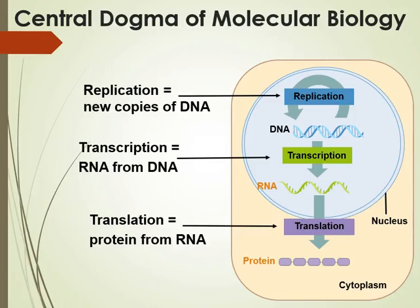Now we're going to focus on DNA replication. Before we get to that, I want to give you the bigger picture, which is this three-step process that allows the code on our DNA molecules to be translated into all of the proteins that our cells need to function. This process allows our genetic information to be passed on from parents to offspring, and for our genetic codes to be translated into the work our cells need to do.